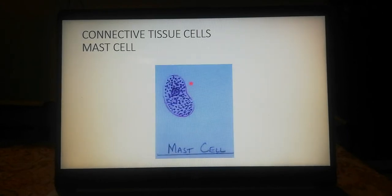The next migrant cell is the mast cell. The mast cell is a large ovoid cell. It is characterized by the presence of large secretory granules in its cytoplasm. These are membrane-bound granules and they are so numerous that they frequently obscure the nucleus.